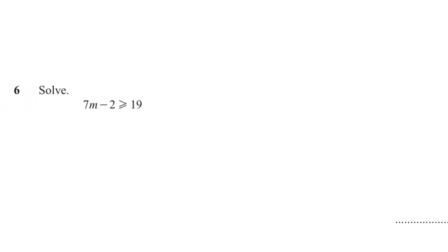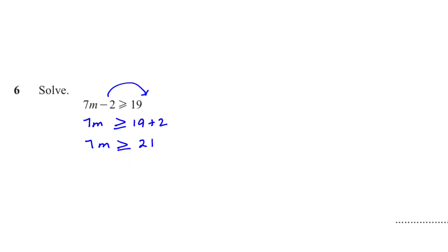Question 6 is an inequality question. We bring the numbers to one side: negative 2, when brought to the other side, becomes positive. So 7m ≥ 19 + 2, meaning 7m ≥ 21. When we bring the multiplier to the other side it becomes division, so m ≥ 21 ÷ 7, giving m ≥ 3.